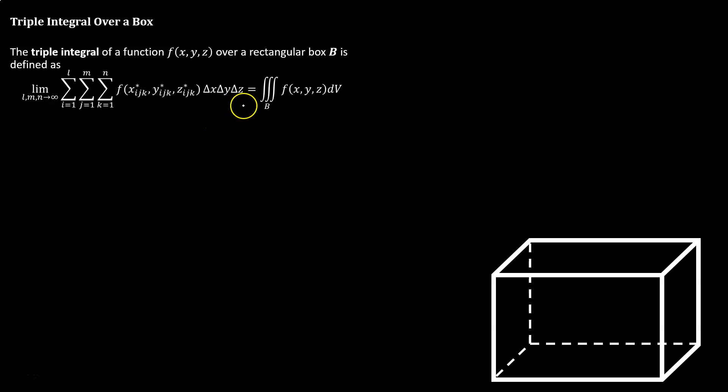If we can let our partition go infinitely tiny, so that we have infinitely many partitions, then that becomes an approximation that is exact, and our delta x, delta y, delta z gets replaced with dv. The big sigma summation notation gets replaced with our elongated sigma integration notation.